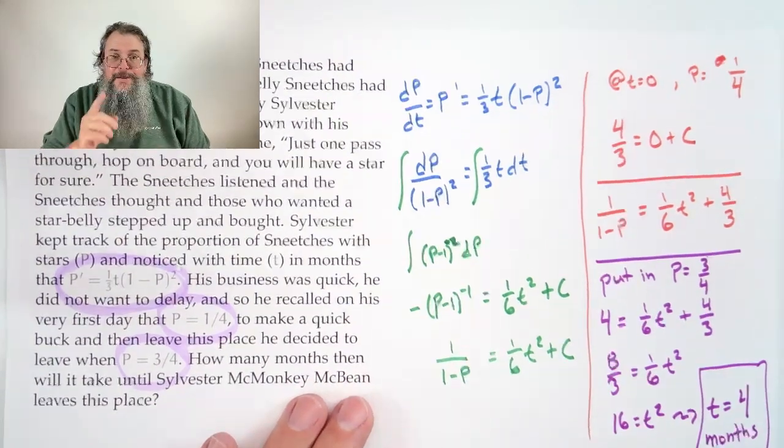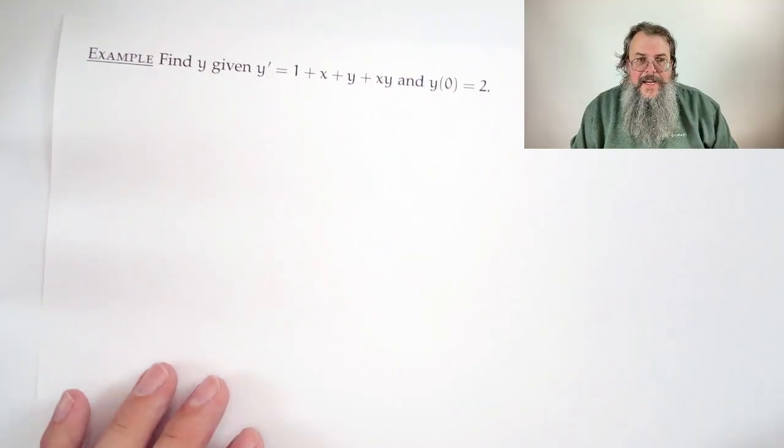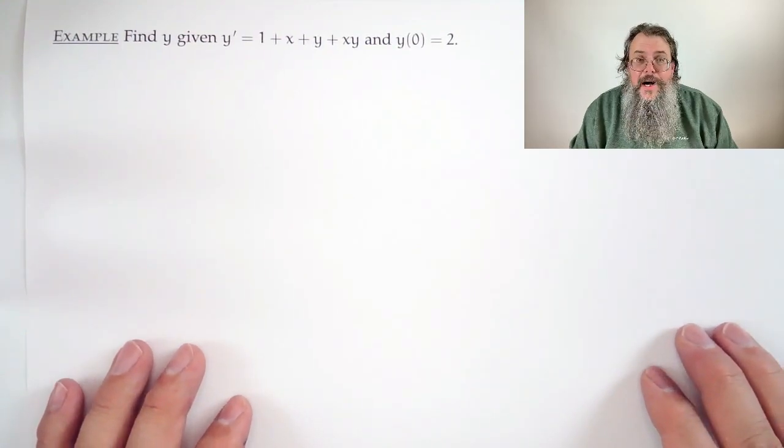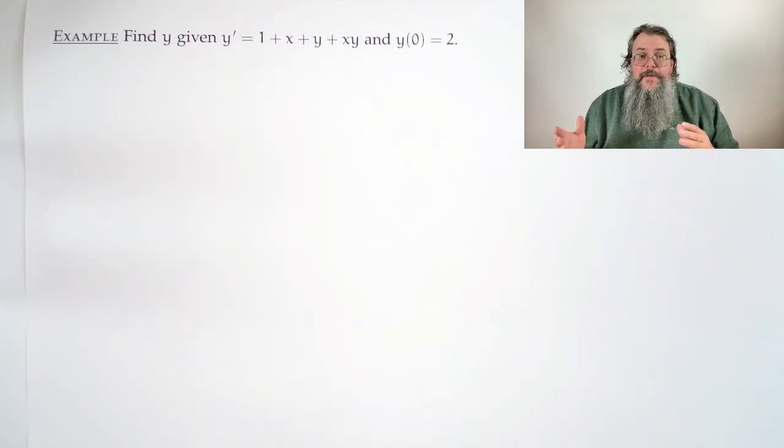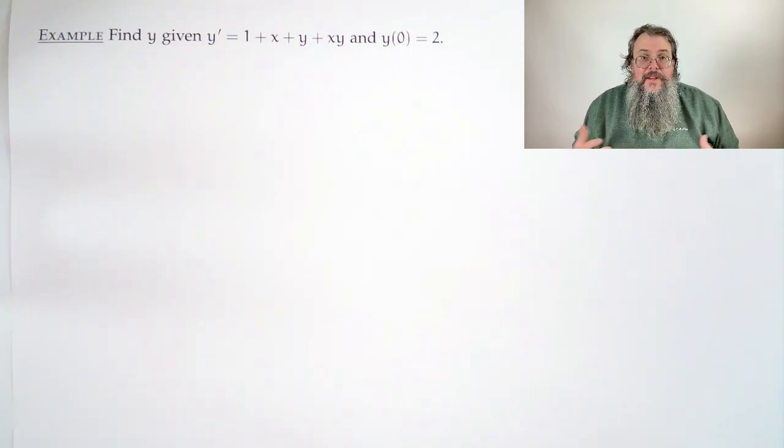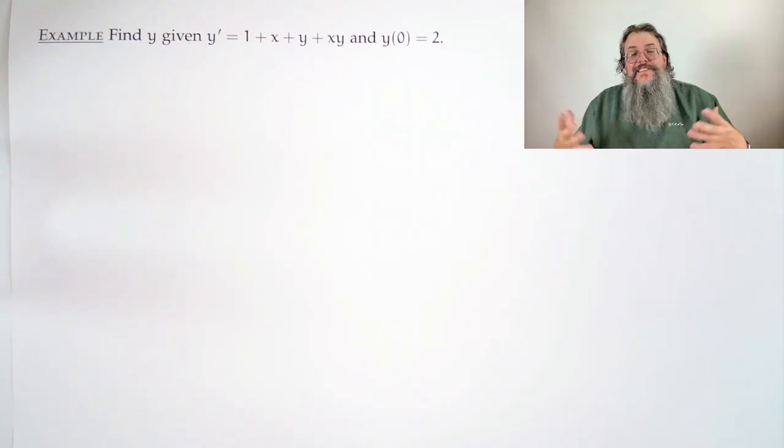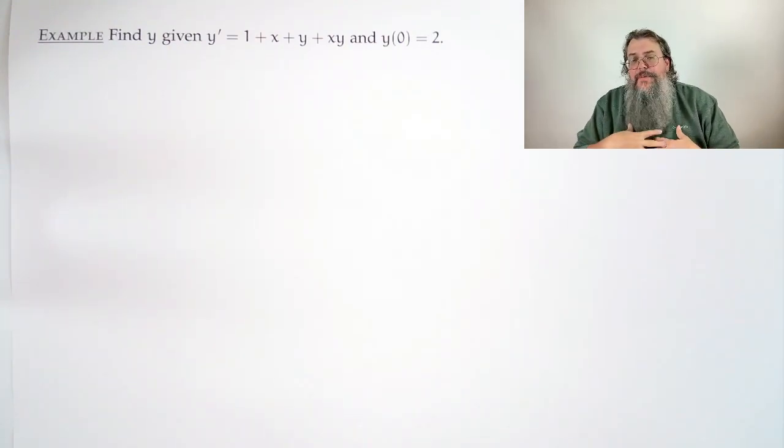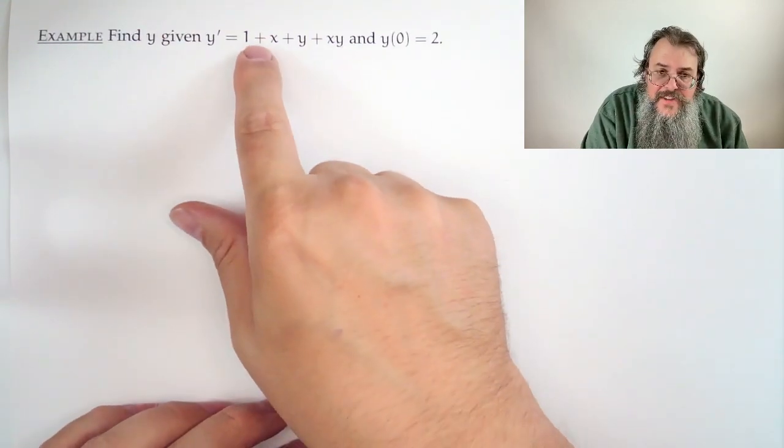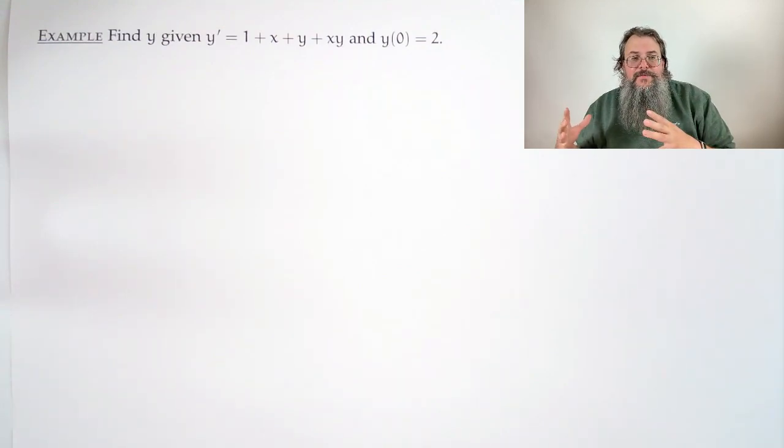Well, there was actually still one more problem after this one. So let's do the other one too. Find y given that y prime is 1 plus x plus y plus xy, and y of 0 is equal to 2. Now you look at this and say it doesn't feel separable, because we have a bunch of stuff being added. Separable, you want a function of x times a function of y. We don't have that here. Not yet.